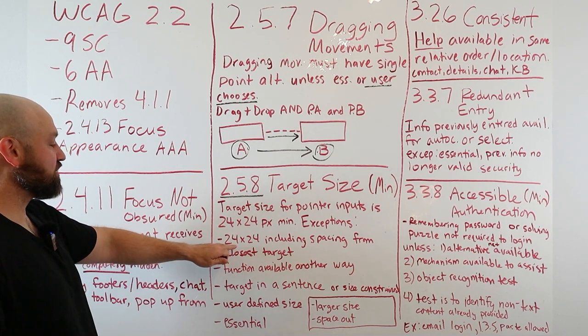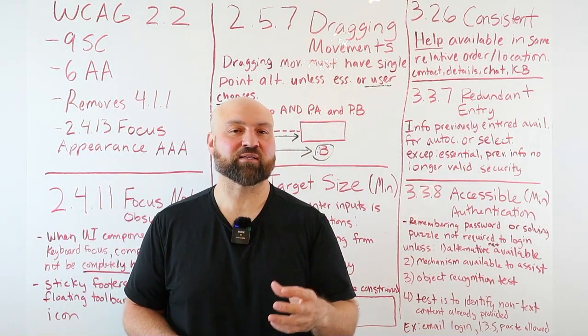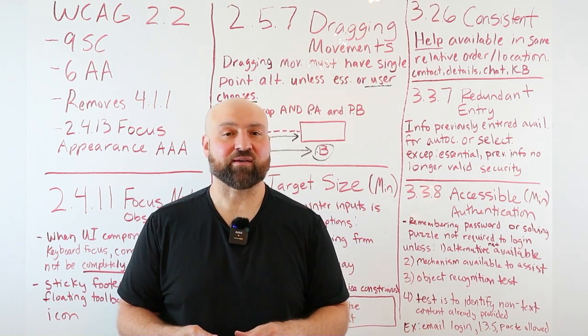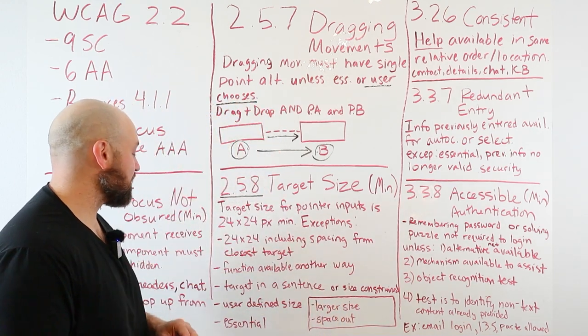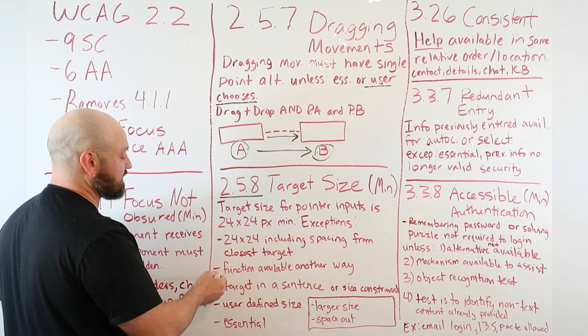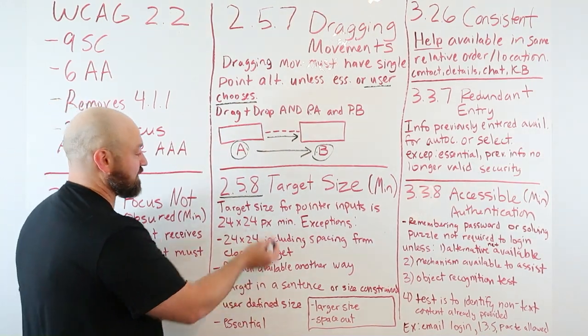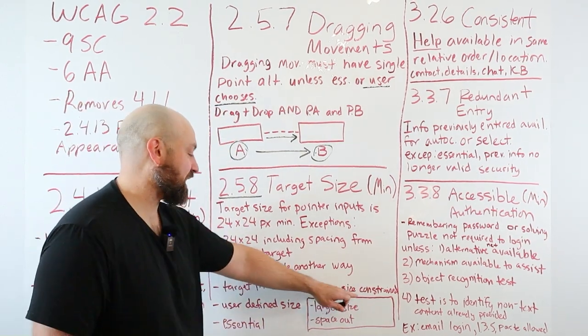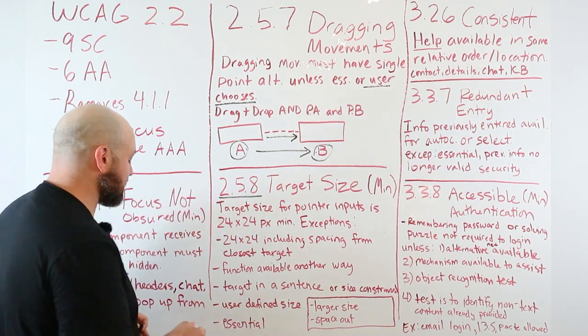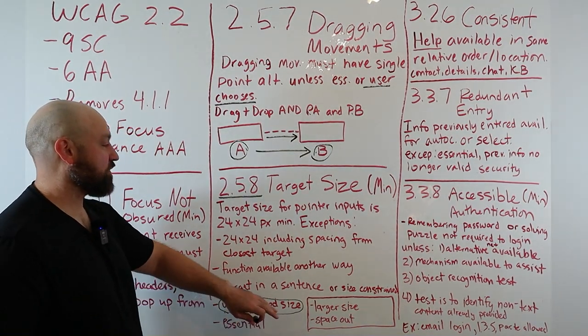Now there are exceptions. The 24 by 24 can include the space from the closest target. So if we have an icon smaller than 24 by 24, it would technically meet the success criterion if the space combined with the icon meets 24 by 24. Also, if there's another function available another way. Another exception is a target in a sentence, like a link in a sentence. Where the size is constrained, the user defined the size, or the target size is essential for legal reasons or another reason.